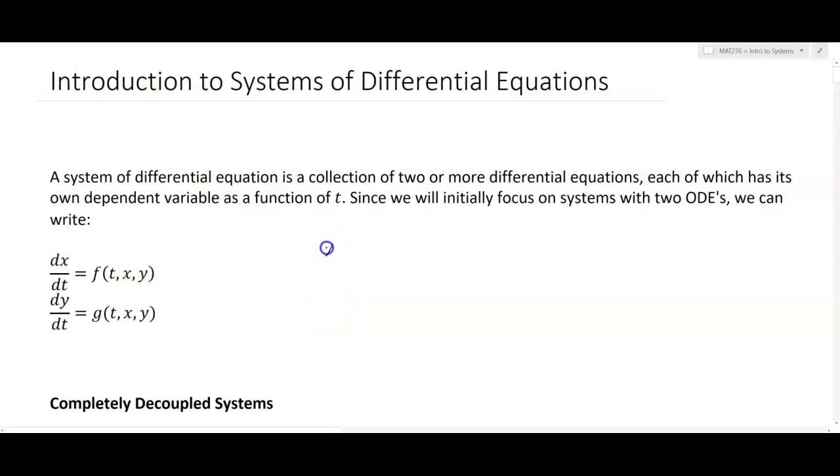So if I were to draw my two dependent variables, I have two dependent variables, x and y. This could represent the number of prey, the number of predators, and both of their rates are determined by time, but they also may be related to one another, and that's what we're allowing for the possibility of.